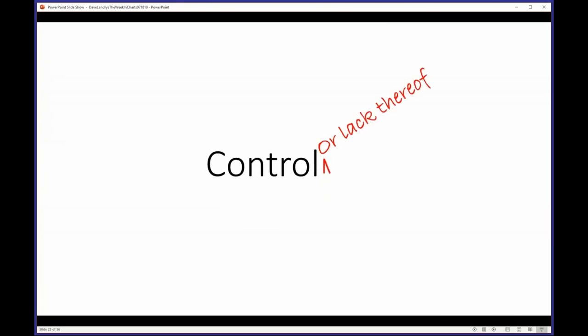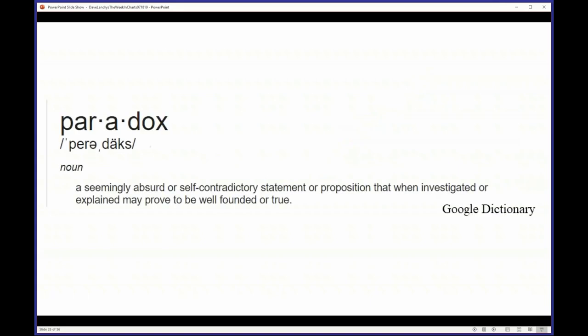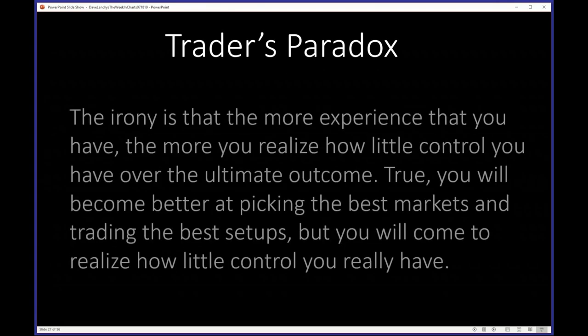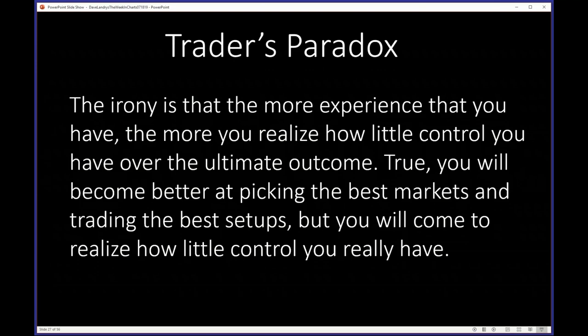I thought control related to a lot of what we're talking about. Like Selden said, you must not subordinate your will unto the market. I picked up some slides on control — and more importantly, its lack thereof. It's really paradoxical. A paradox is a seemingly absurd or self-contradictory statement that when investigated may prove to be well-founded or true. The trader's paradox: the irony is that the more experience you have, the more you realize how little control you have over the ultimate outcome.